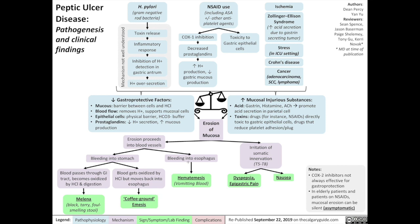In addition, bleeding into the esophagus can lead to blood being directly vomited out, otherwise known as hematemesis. Erosion of the gastric mucosa also irritates the somatic nerves that innervate the stomach — the T5 to T8 dermatomes — resulting in a sensation of dyspepsia or epigastric pain, as well as nausea.